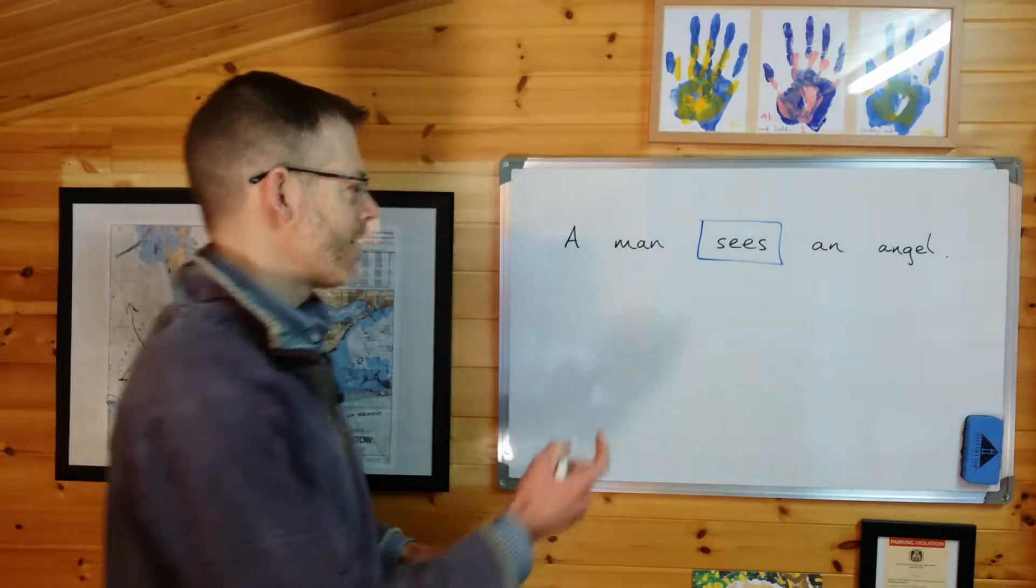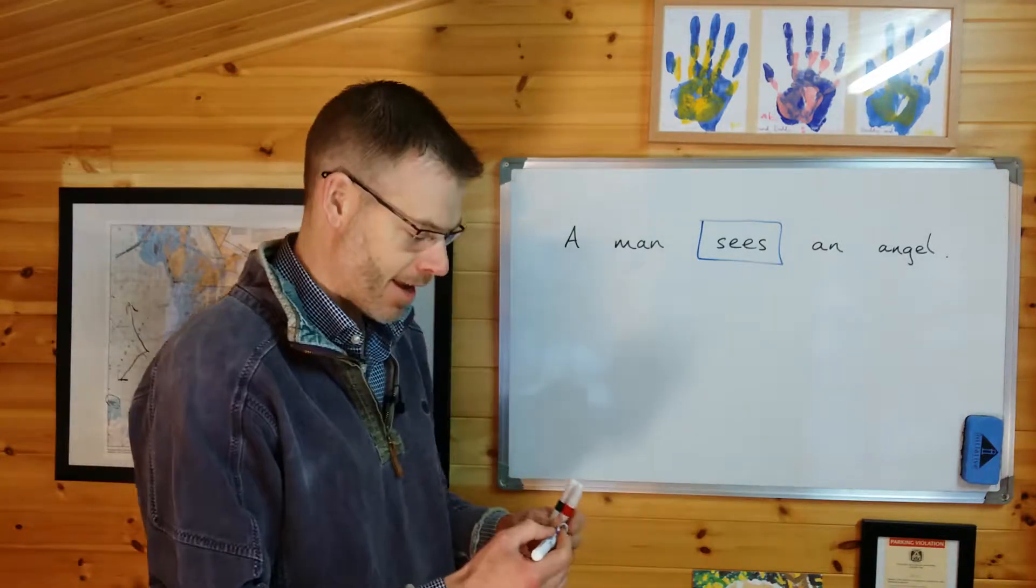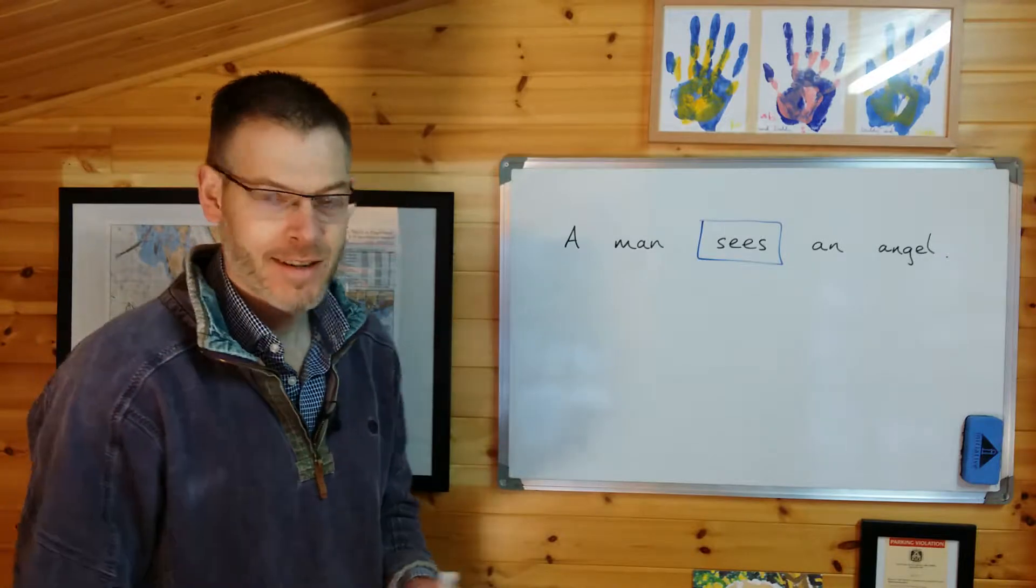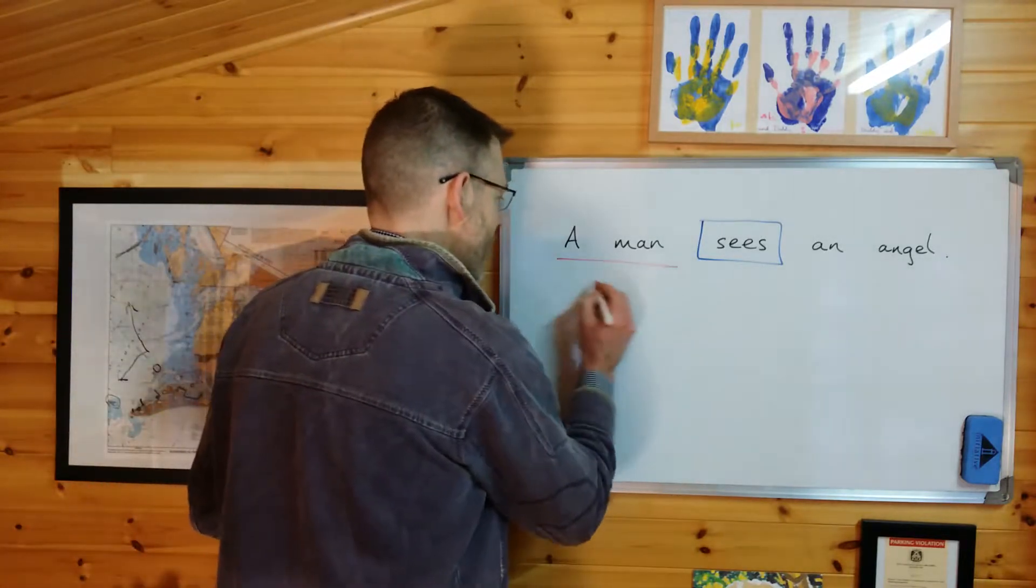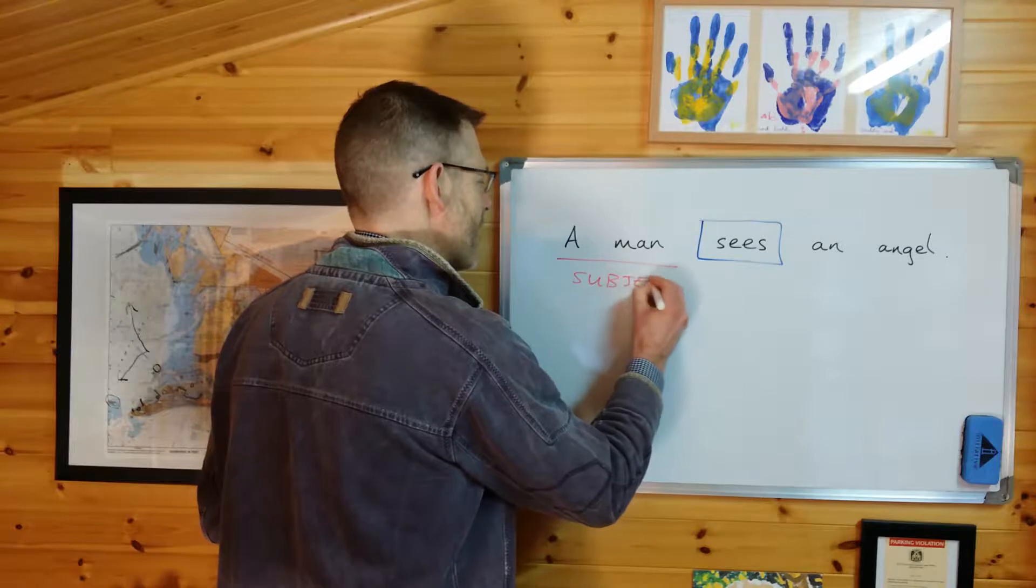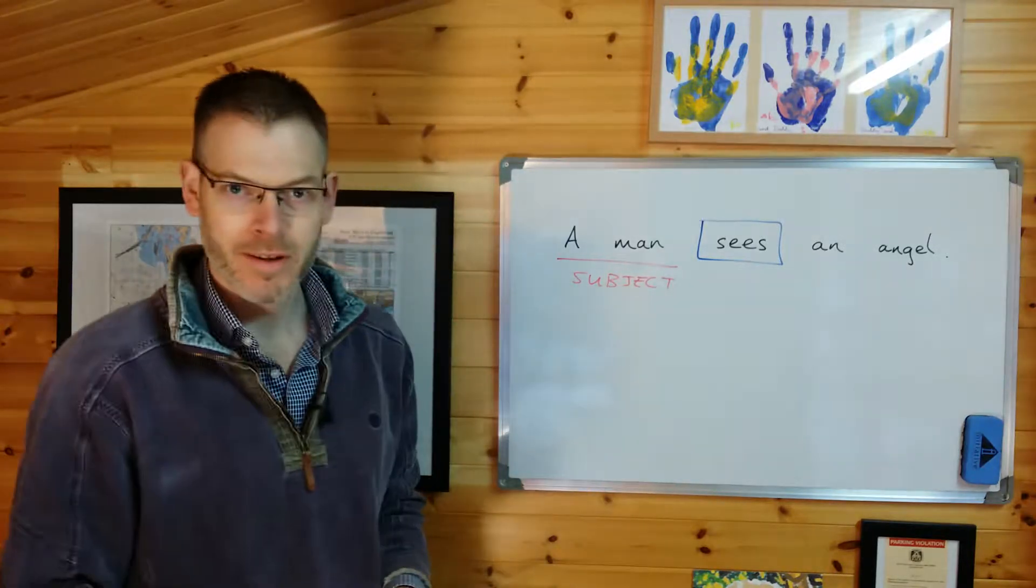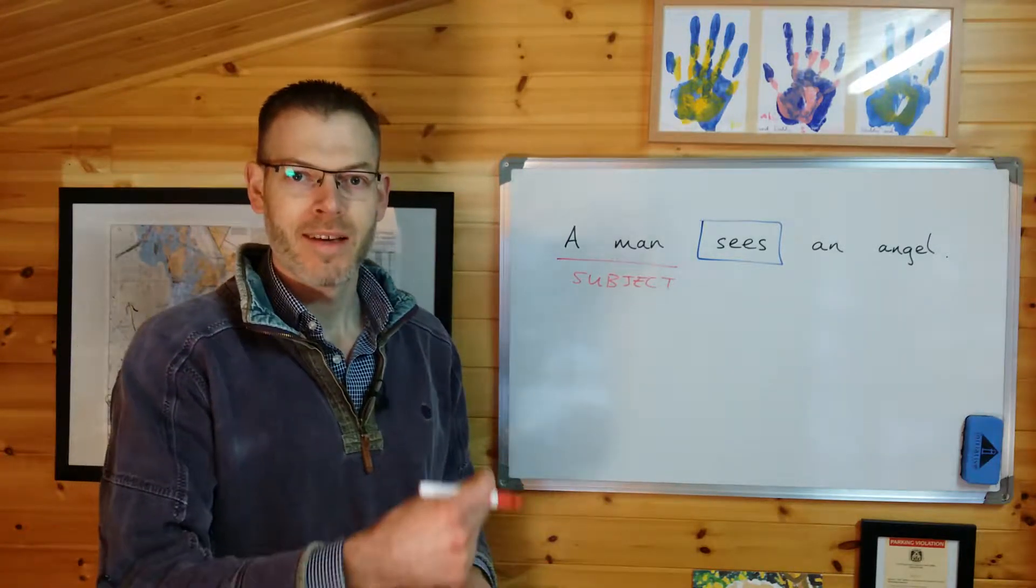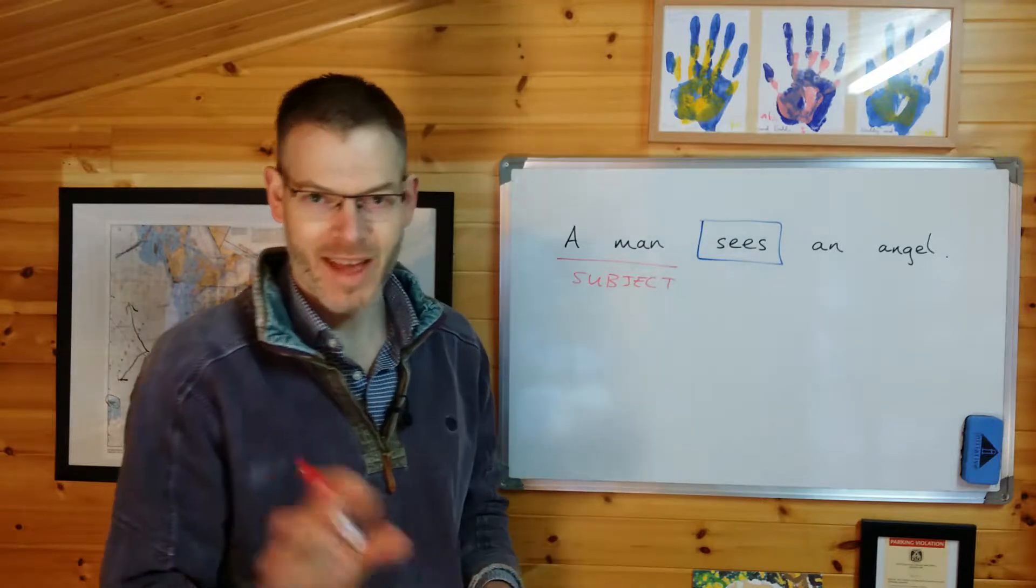Don't worry about that if it's news to you. So who's doing the action of seeing in this sentence? Very easy. The man is the subject of the verb. The subject of a verb is the person doing the action with active verbs.